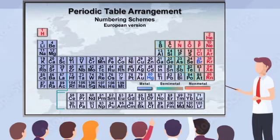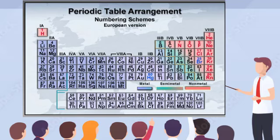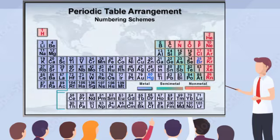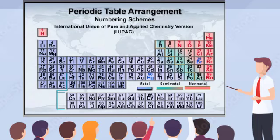In a European version, groups are labeled sequentially from the left as 1A through 8A, with 8A spanning the elements iron, cobalt, nickel, and those below. The groups to the right of group 8A are labeled 1B through 8B. In an attempt to resolve differences in styles, the International Union of Pure and Applied Chemistry adopted a third system in 1985.